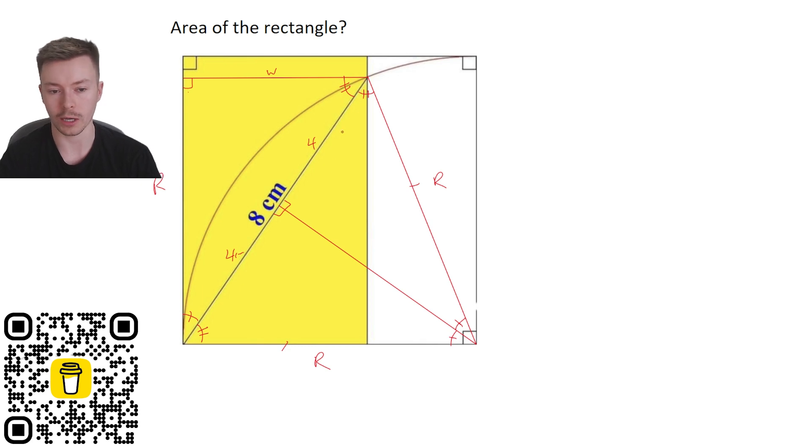Okay, now what we've got here, which you might have noticed already, is some similar triangles. So because they've all got the same angles in them, specifically this one here and this one—well actually the left hand one and either of these two—they're similar, and so we can use that hopefully to work out some sides.